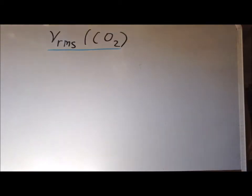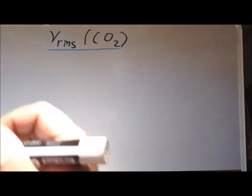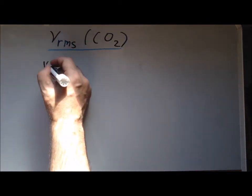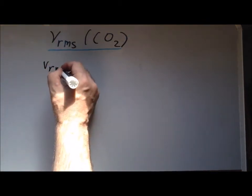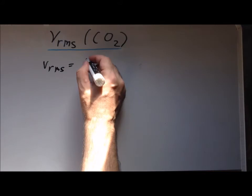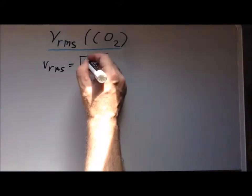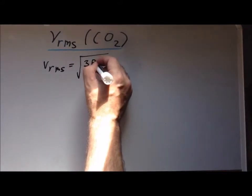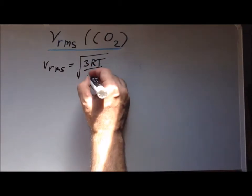Hello. In this video, we are going to calculate the root mean squared velocity of a carbon dioxide molecule. First, recall that the root mean squared velocity can be calculated as the square root of 3RT divided by M,